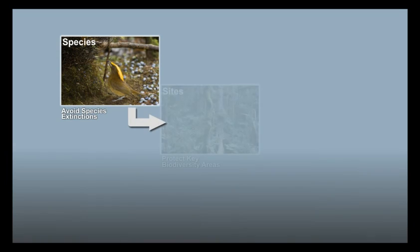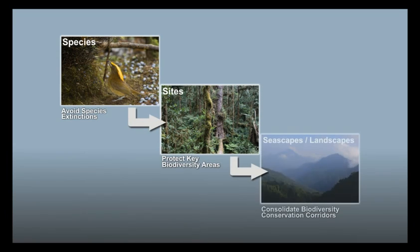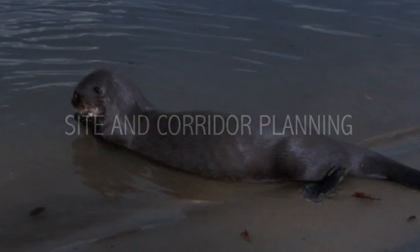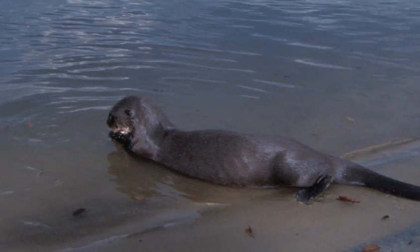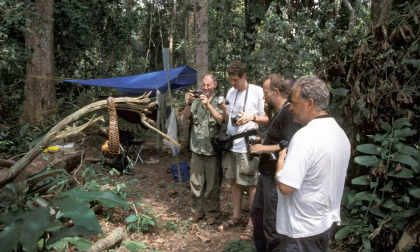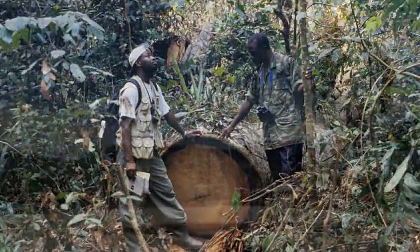Now that we have identified our targets and prioritized amongst them, we need to design strategies that will ensure their conservation. At the species and site scales, we come up with actions based on the local context. This includes information on the needs of trigger species, the threats to the site, and the needs of local people.